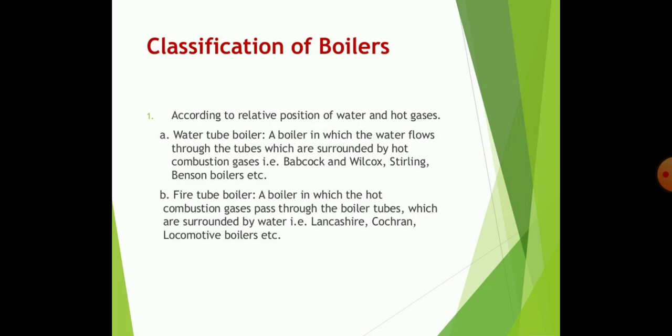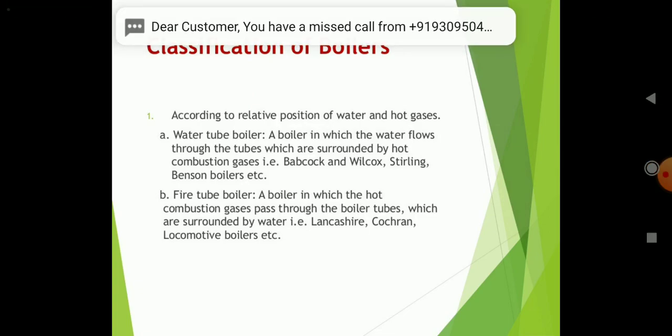Now, what are the water tube boilers? Water tube boilers may be defined as in which the water flows through the tubes which are surrounded by the hot combustion gases. That is Babcock and Wilcox boilers are the names of scientists which are invented this kind of boiler. In this type, the gases are heated from and they are surrounded by the tubes in which water flow is there.